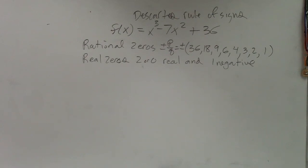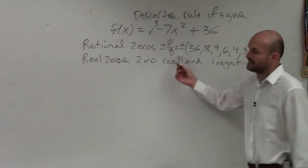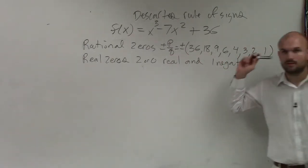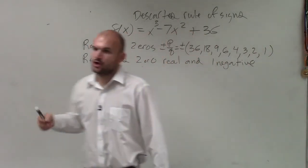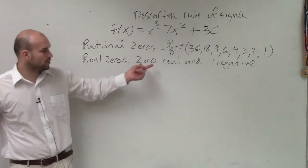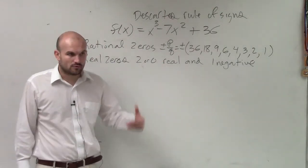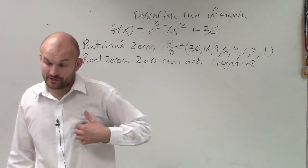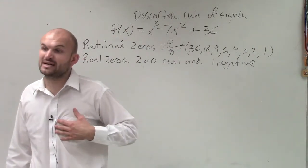So far in this problem, we have been able to determine, by applying the rational zero test, we came up with these rational zeros. By applying Descartes' rule, we figured out that there's either two or zero real zeros, and there's exactly one negative real zero. So how do we determine if we have zeros or not?